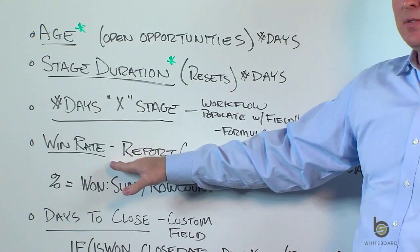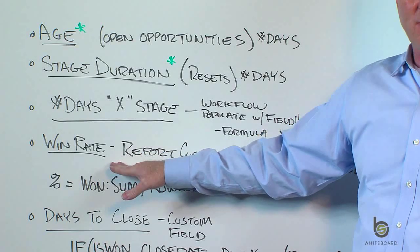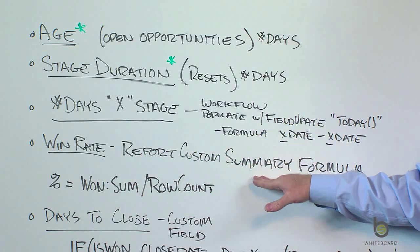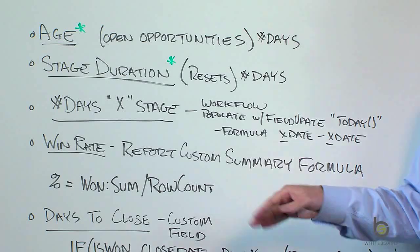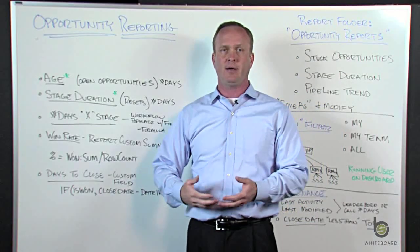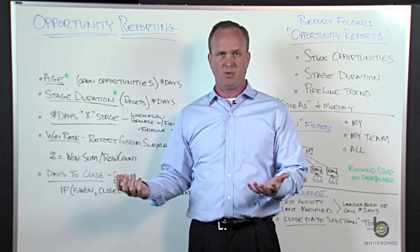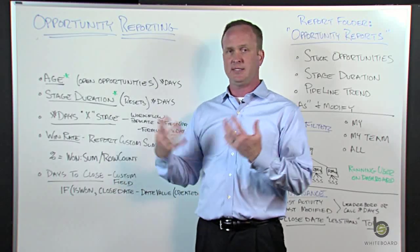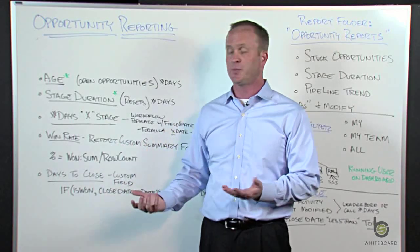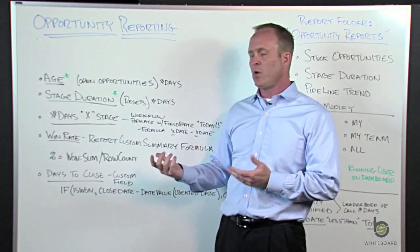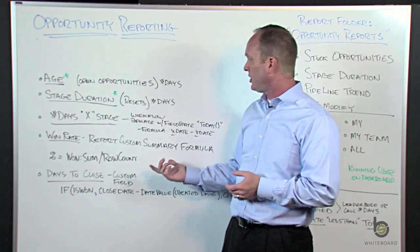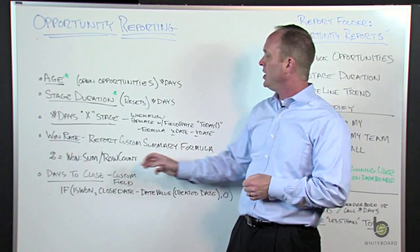Another option is a report custom summary formula. A lot of clients want to know their win rate — of all the opportunities out there, what's our win rate as a company, or maybe by salesperson. When you're in the report wizard, you have the option of creating these custom summary formulas.